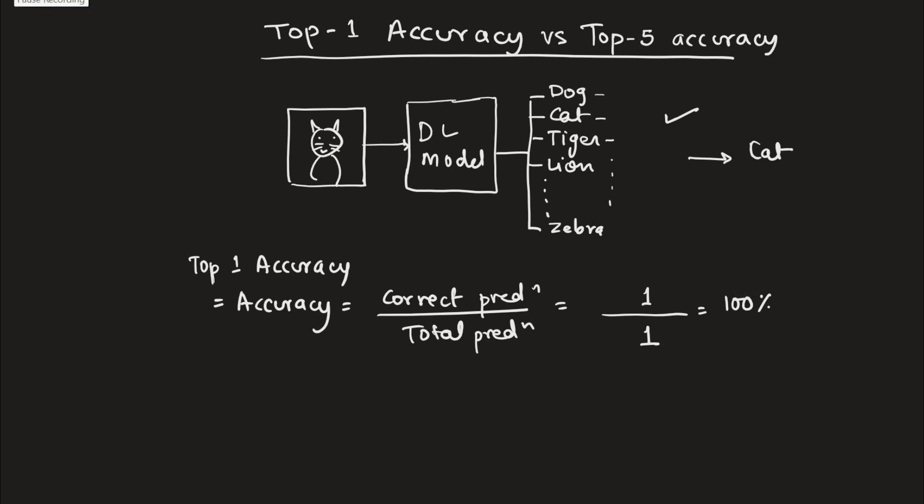So it says that the probability of this cat image being a dog was 0.5, cat was 0.3, tiger was 0.2 and the rest of them are even lower. So in this case what we would conclude from this probability is that the highest probability is of a dog. So our image belongs to a dog.